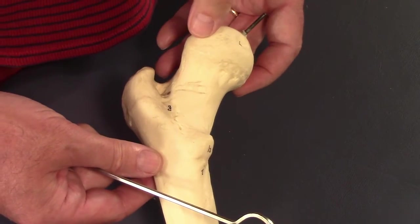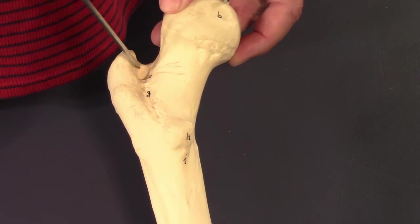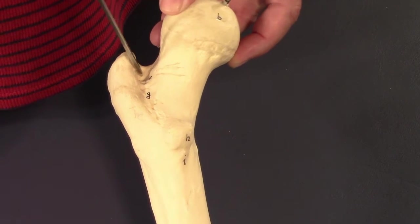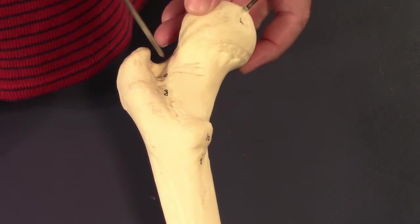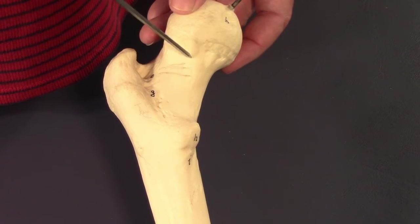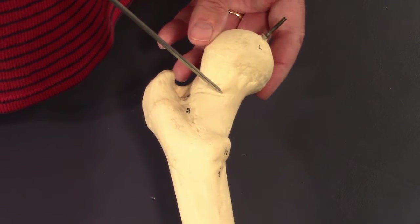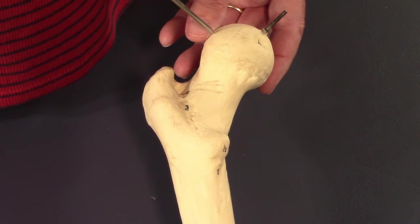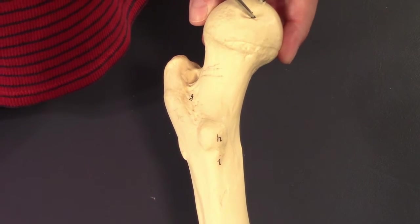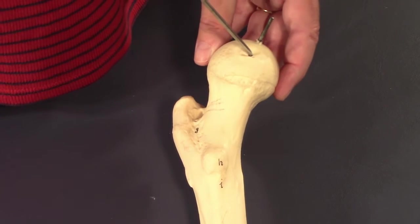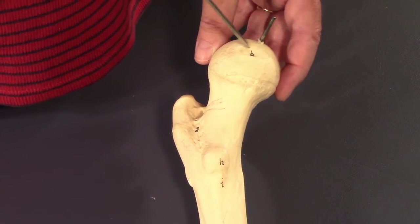Look out for that one. How about this cubby hole again? You can see trochanteric fossa. This again, neck of the femur. Head of the femur. Fovea.